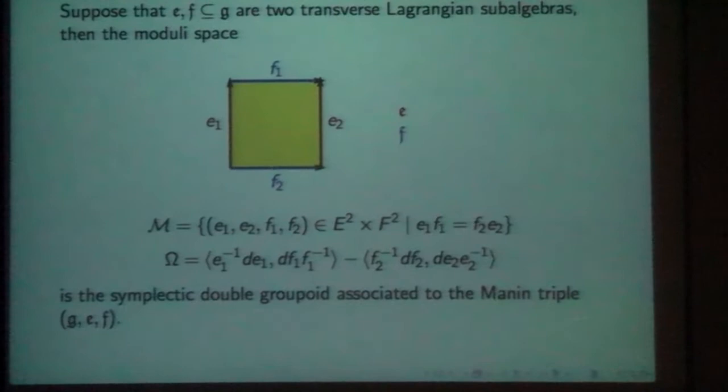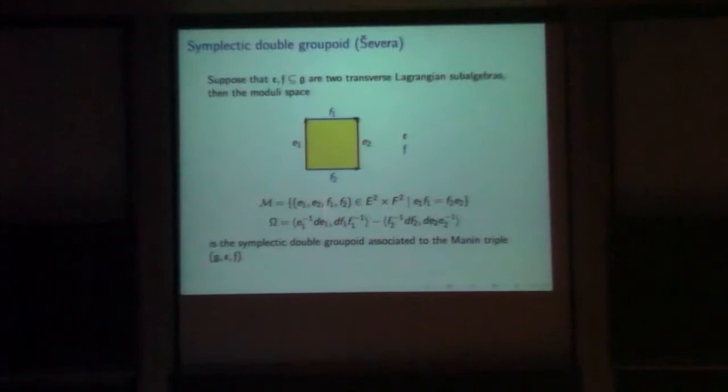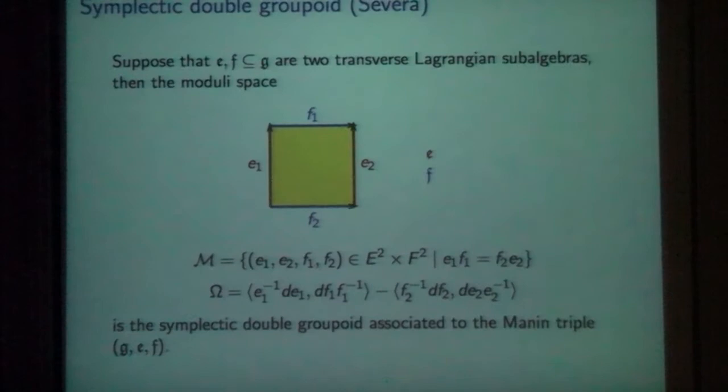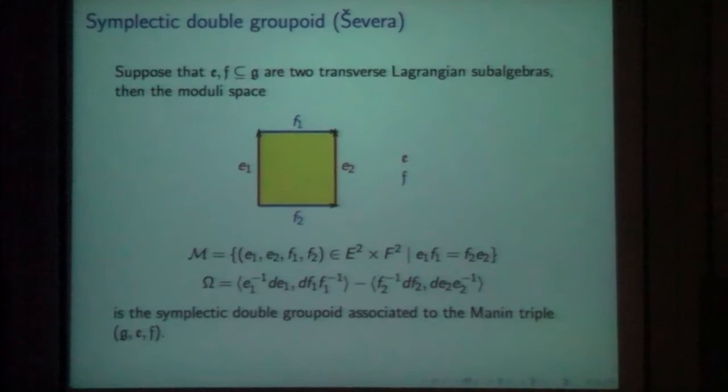What is the symplectic form? How do we get that? We take the square and cut it along the diagonal from the bottom left to the top right — that gives two triangles. Each triangle carries the two-form I described above: the top-left triangle has one two-form and the bottom-right triangle has another two-form. The symplectic form is essentially a combination — in this case a difference — of these two two-forms. You can see from this example that it's pretty easy to describe both the moduli space and the symplectic form for a particular picture.